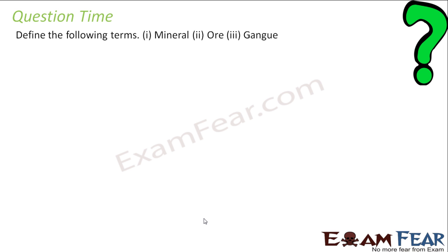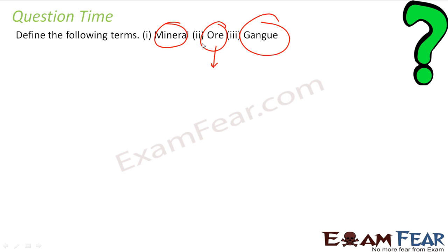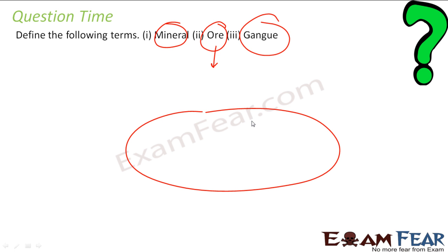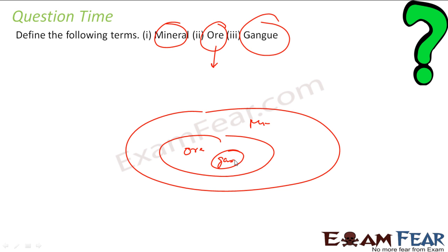Now it is question time. Define the terms gang, mineral, and ore. A mineral is a natural state substance from which you get metals, either in free or combined state. Ore is a subset of minerals from which you can extract metals profitably. Gang is the impurity found inside the ore. So: minerals contain ore, ore contains gang, and not all minerals are ores.